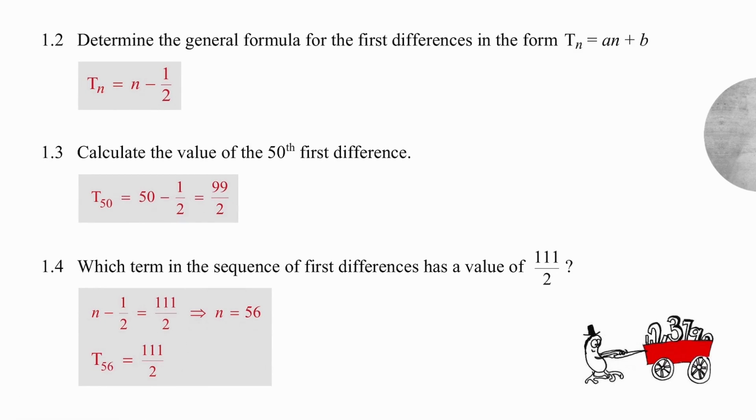In question 1.2, we need to find a formula for the row of first differences. So we're going to write out the first differences and then simply create a formula. We can see that the gaps between those first differences consistently produce a value of 1. So our formula is Tn equals 1n plus b. The value of the first term is a half, so a half is equal to 1 plus b, and b is equal to minus a half. So we have the formula Tn equals n minus a half.